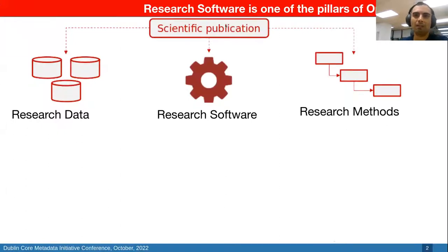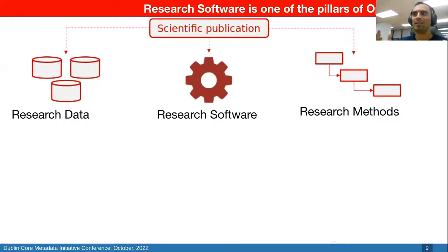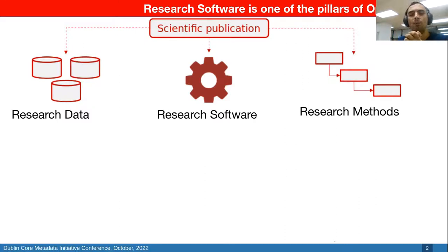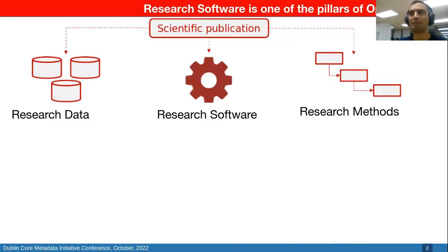Research software is one of the pillars of open science. In most computational sciences, a scientific publication usually has three main contributions: it's either about a research data product, it proposes a new method, or it proposes new software to produce or consume a research data outcome. There are other types of publications, but I'm not covering them here today.